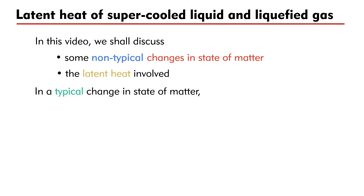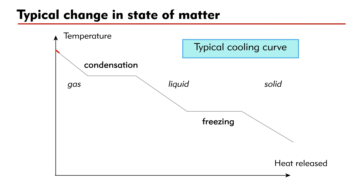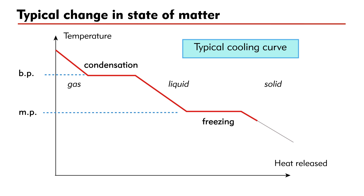In a typical change in state of matter, the temperature of the substance remains unchanged. Consider the familiar cooling curve — this represents two typical changes in state of matter. In the first phase change, the gas condenses into a liquid at boiling point, and the temperature is constant during condensation. In the second phase change, the liquid freezes into a solid at melting point, and the temperature is also constant during freezing.